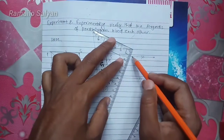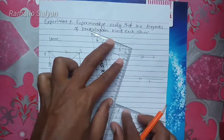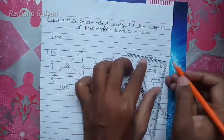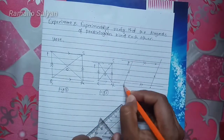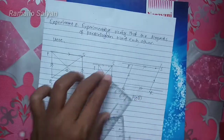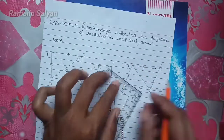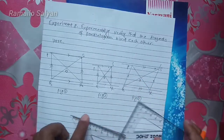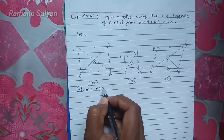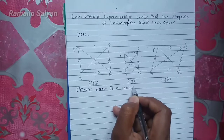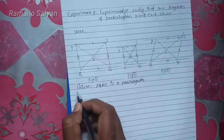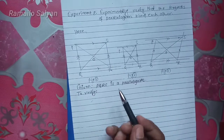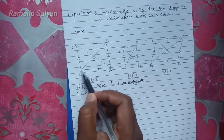Draw the next pair of parallel lines for the third parallelogram PQRS, then join opposite vertices. Suppose the intersecting point is O. Given PQRS is a parallelogram. To verify that the diagonals bisect each other: length of PO equals RO, and length of QO equals SO.